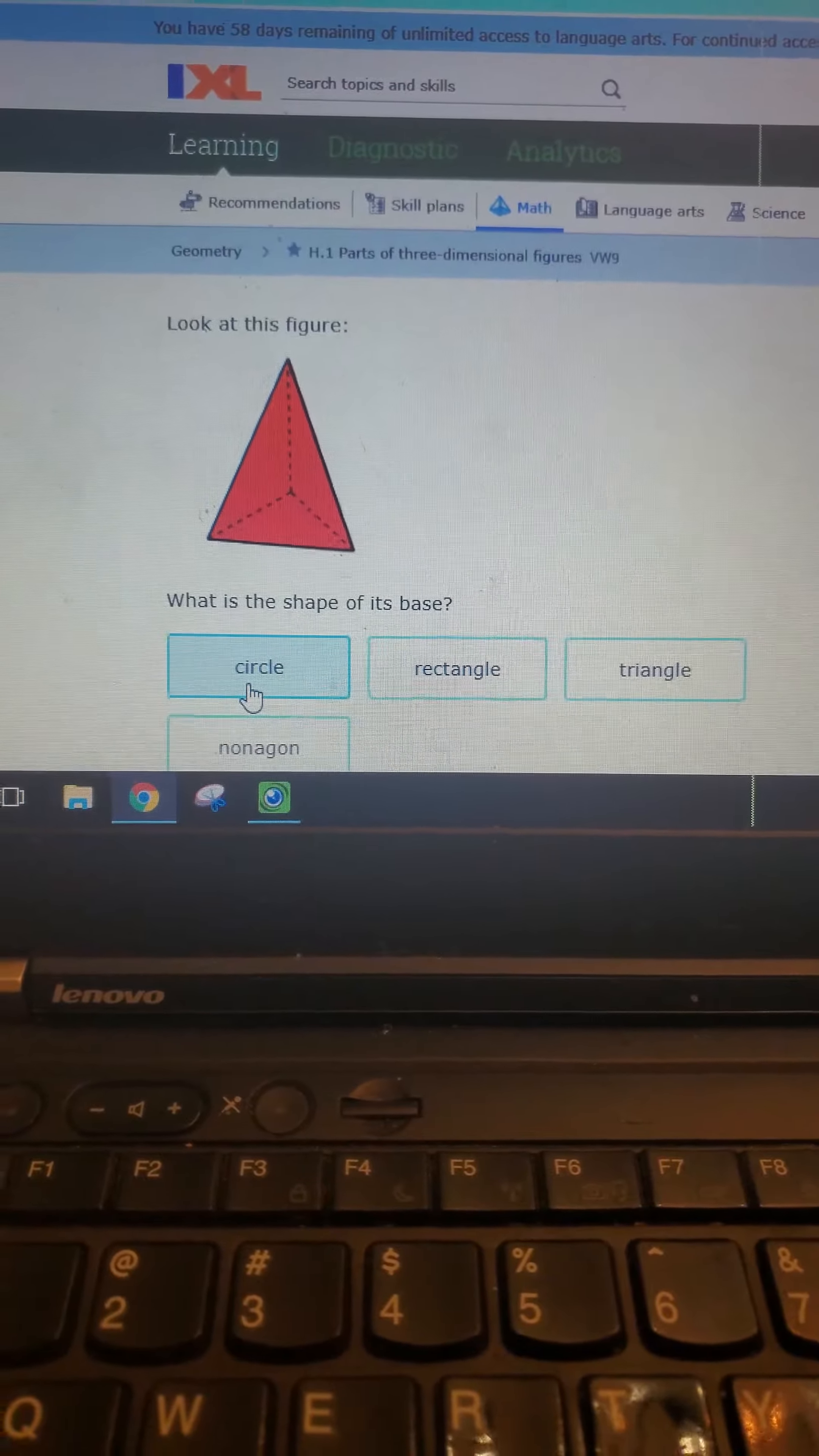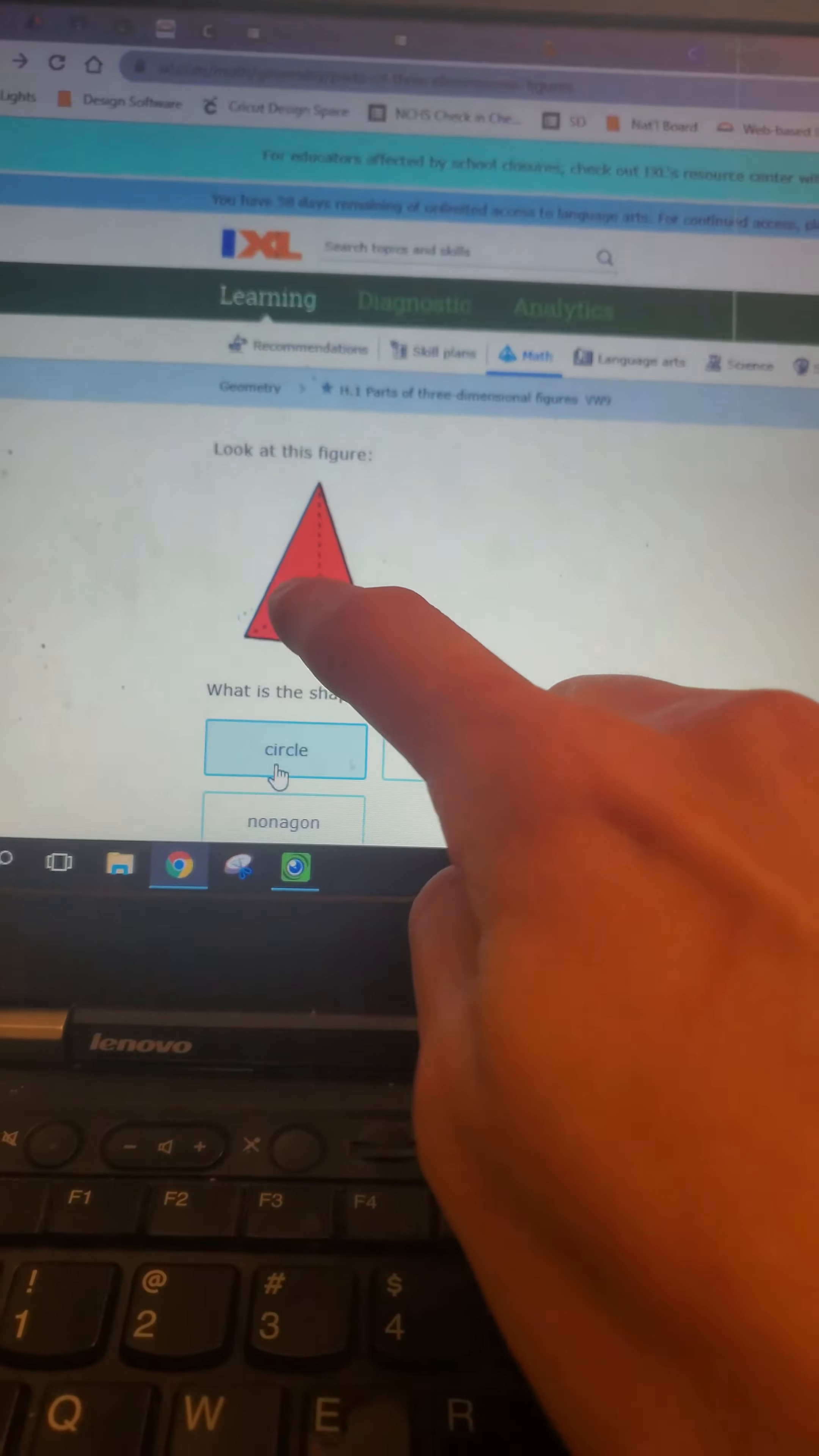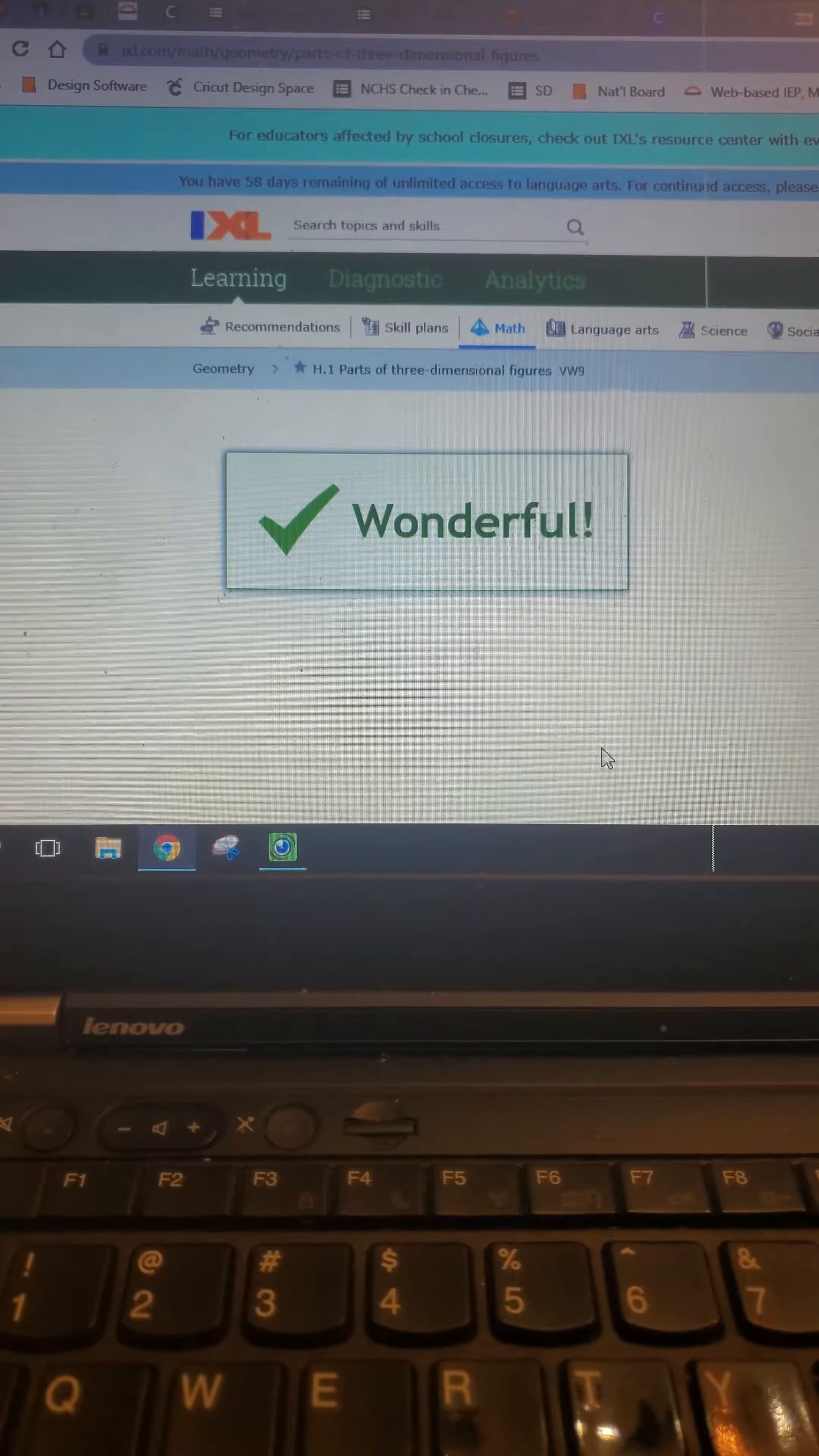Look at this figure. What is the shape of its base? Our options are circle, rectangle, triangle, and nonagon. So this is a pyramid, and it's a triangular pyramid. Its base is a triangle. So it's a triangle. There we go.